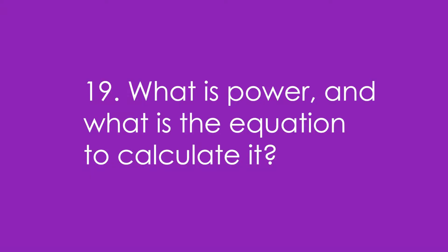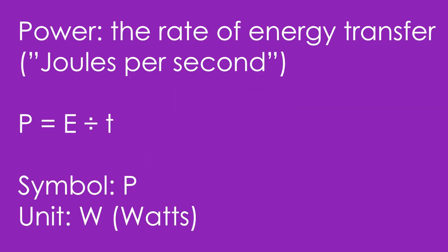19. What is power, and what is the equation to calculate it? Power is the rate of energy transfer, or joules per second. So that means power equals energy divided by time. Symbol is P, and the unit is watts.